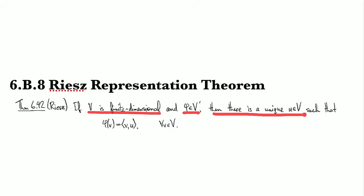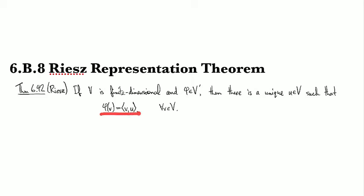What it says is that for any element of the dual there is a unique element of the vector space itself such that the dual is actually given as the inner product with respect to that element. So in other words you can represent elements of the dual with elements of the vector space inside an inner product.